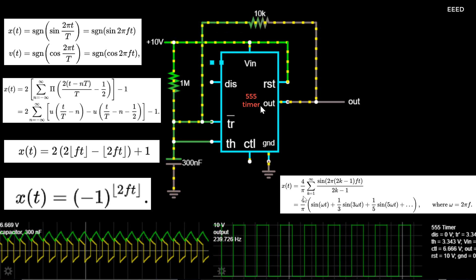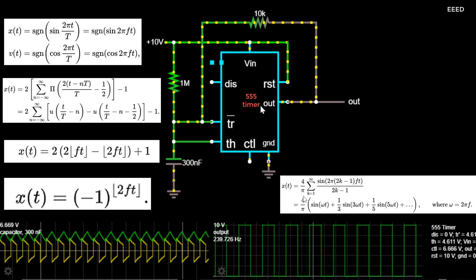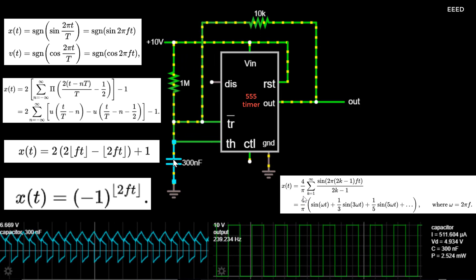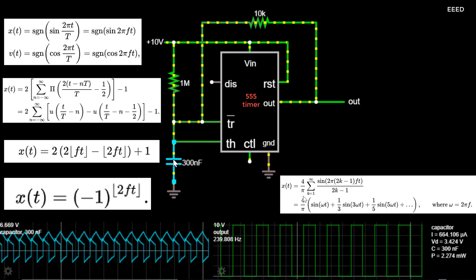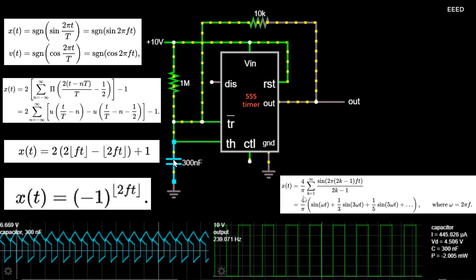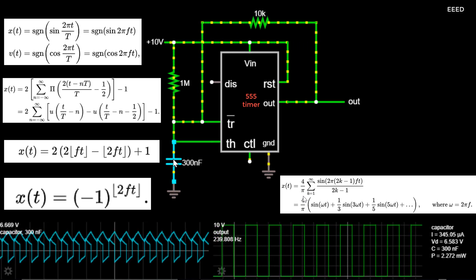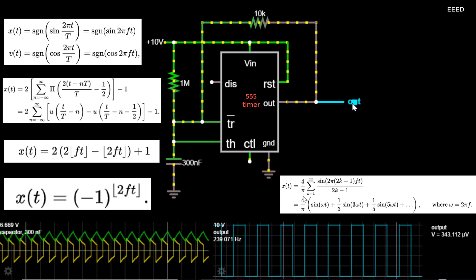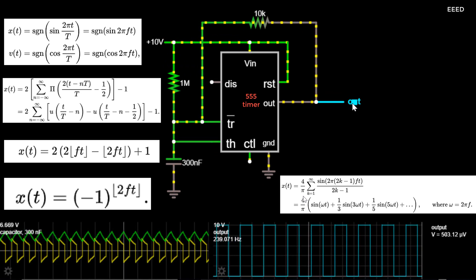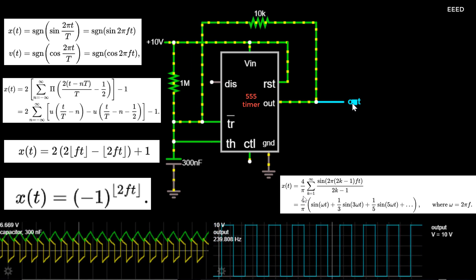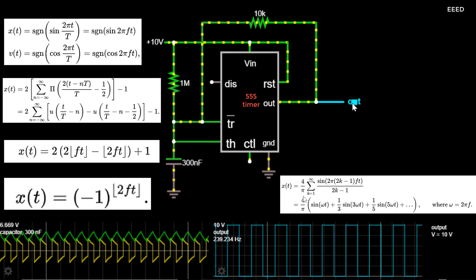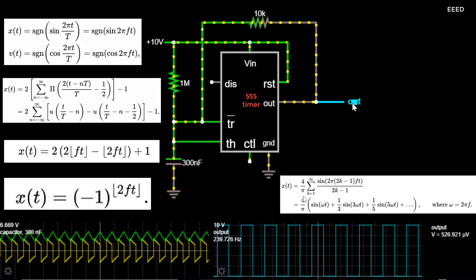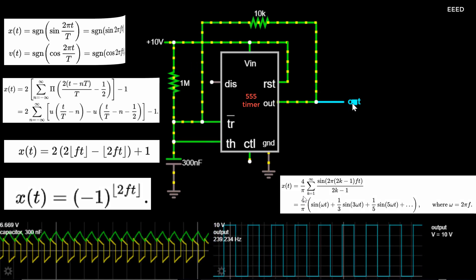As already mentioned, an ideal square wave has instantaneous transitions between the high and low levels. In practice, this is never achieved because of physical limitations of the system that generates the waveform. The times taken for the signal to rise from the low level to the high level and back again are called the rise time and the fall time respectively. If the system is overdamped, the waveform may never actually reach the theoretical high and low levels; if underdamped, it will oscillate about the high and low levels before settling down. In these cases, rise and fall times are measured between specified intermediate levels, such as 5% and 95% or 10% and 90%. The bandwidth of a system is related to the transition times of the waveform, with formulas allowing one to be determined approximately from the other.